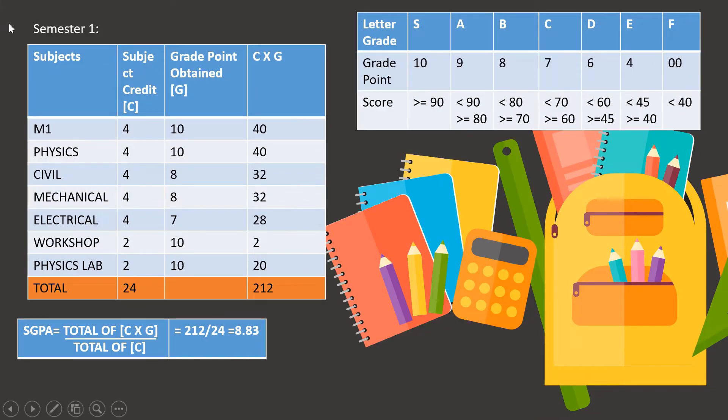So suppose here we have an example. Now this is the grade scale table and this is based on CBCS 2017 scheme. So if you get above 90 marks, it is taken as 10 points and the grade is taken as S. If it's greater than 80 and less than 90, then the point is 9, grade is A and so on. You can check out the table. Now let's see how to calculate the SGPA.